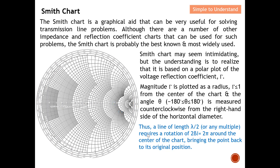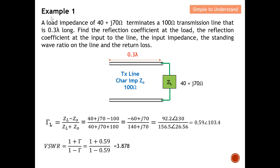Now we are ready to work through an example. A load impedance of 40+j70 Ω terminates a 100 Ω transmission line that is 0.3λ long. We need to find: the reflection coefficient at the load, the reflection coefficient at the input, the input impedance, the standing wave ratio (SWR), and the return loss.